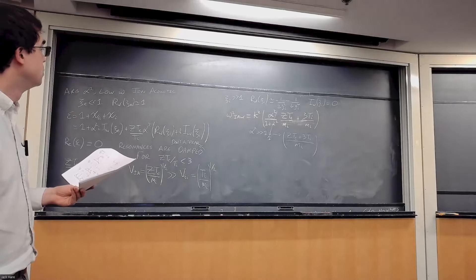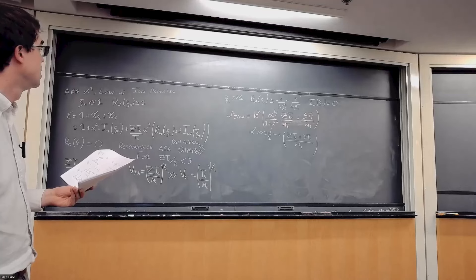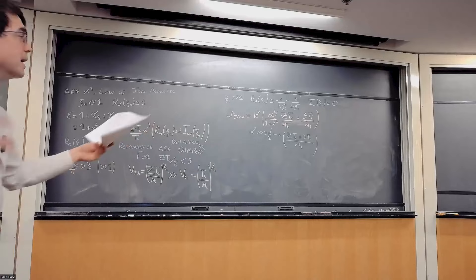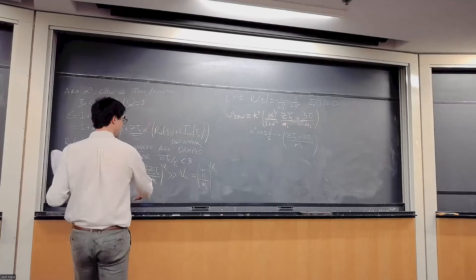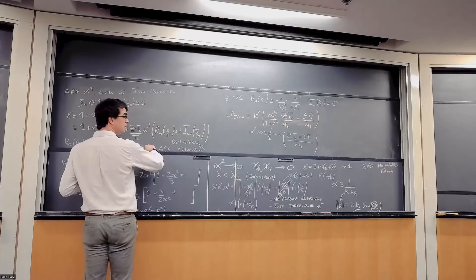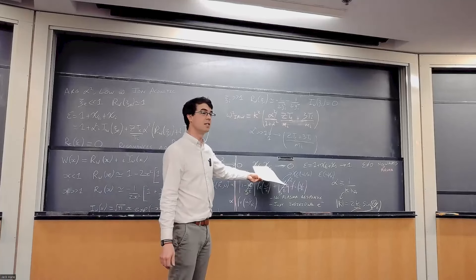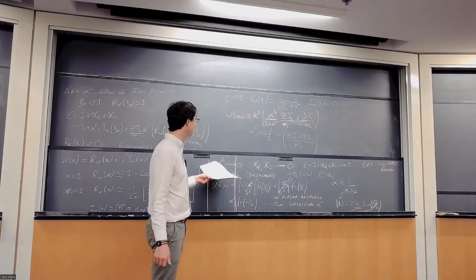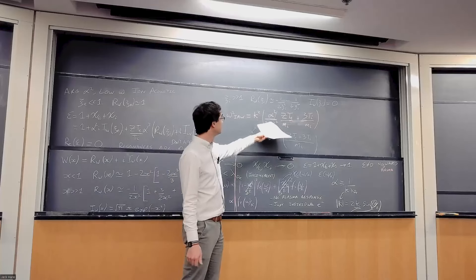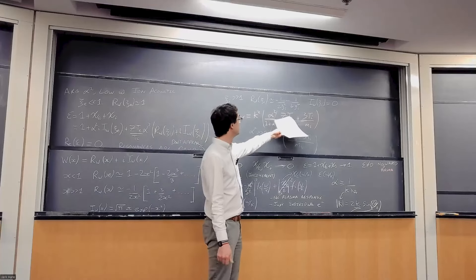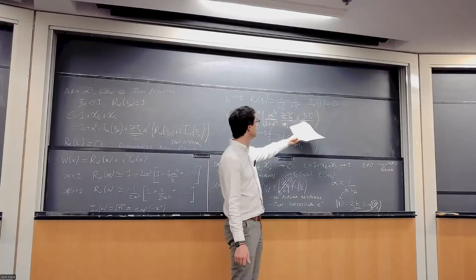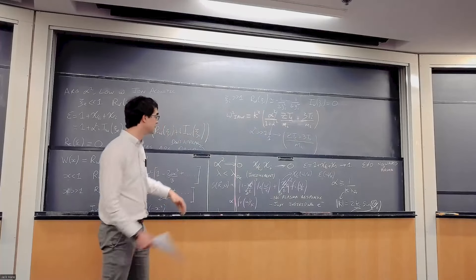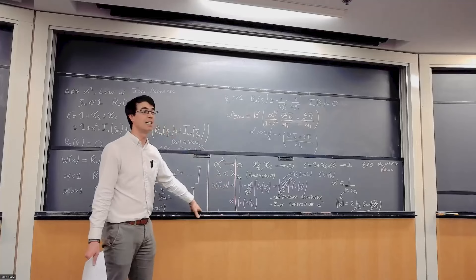If alpha is small, although these resonances would formally appear in the formula, they will not actually appear because a small alpha means the ions and electrons don't respond anyway and we get back to our incoherent scattering spectrum. So although it might look like you would get acoustic resonances at 3Ti/Mi in that limit, in reality those resonances wouldn't occur because we would just be doing incoherent scattering.